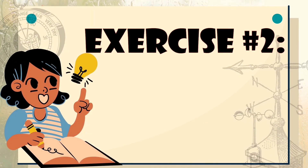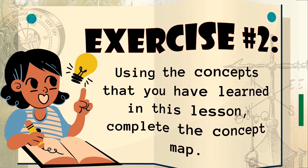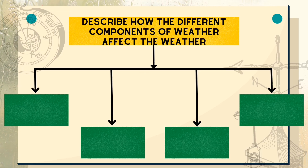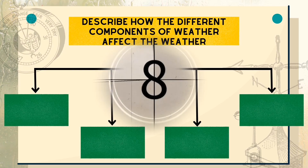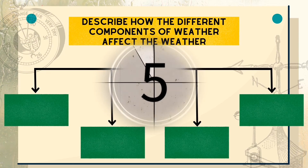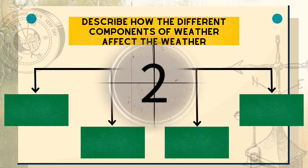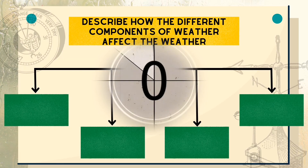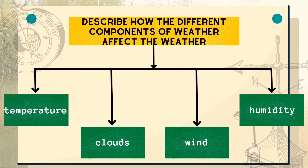Great work, kids! Now we have Exercise 2. Using the concepts that you have learned in this lesson, complete the concept map. You have 10 seconds for this activity. Good luck! Now let's check your answers. We have temperature, clouds, wind, and humidity. You can also add air pressure and precipitation to your answer.